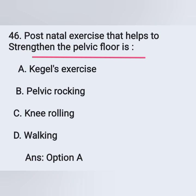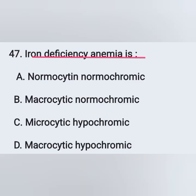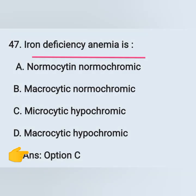Question 47: Iron deficiency anemia is — options: option A, normocytic normochromic; option B, macrocytic normochromic; option C, microcytic hypochromic; option D, macrocytic hypochromic. Iron deficiency anemia is microcytic hypochromic. Option C is the correct answer.